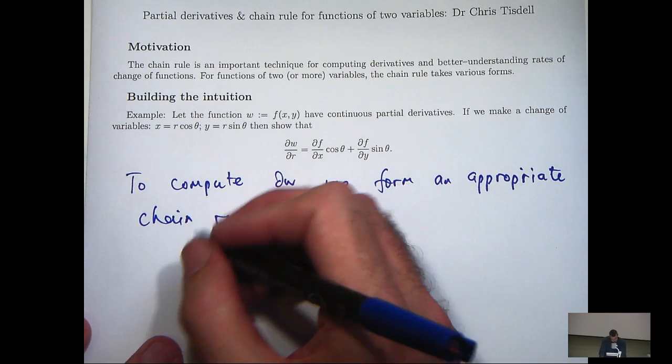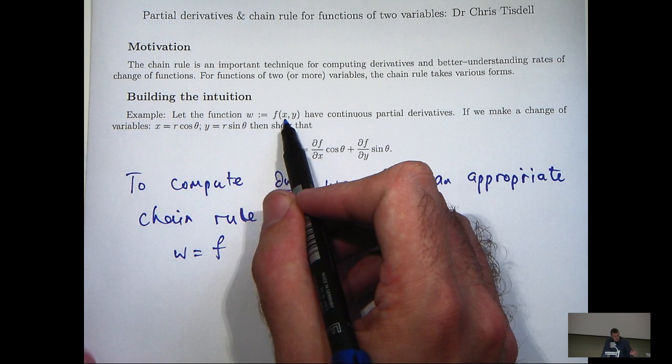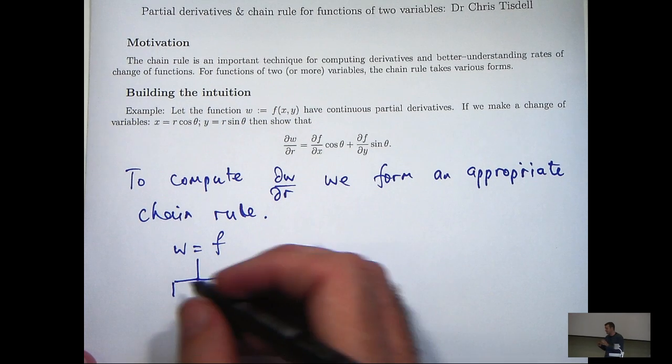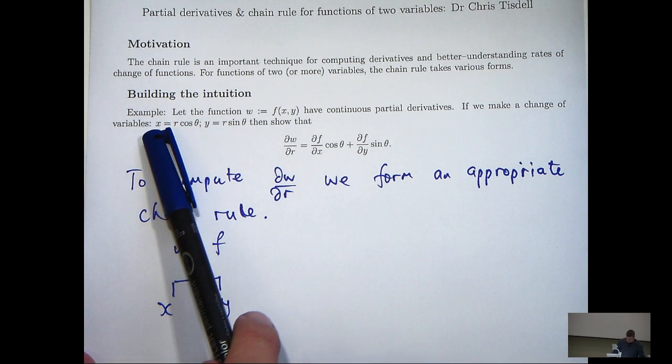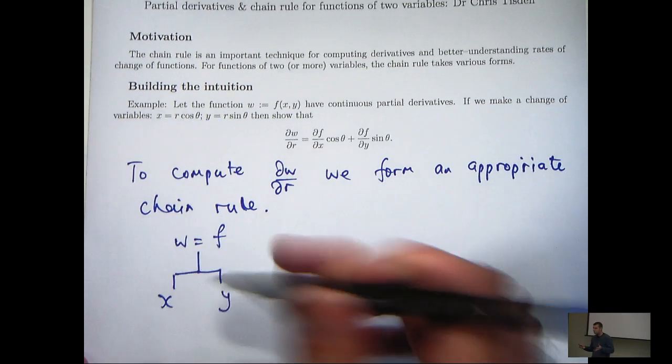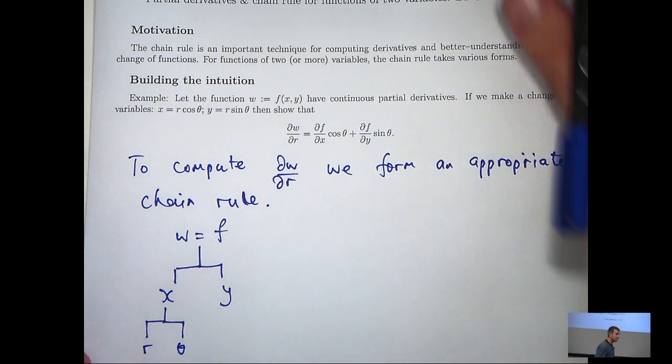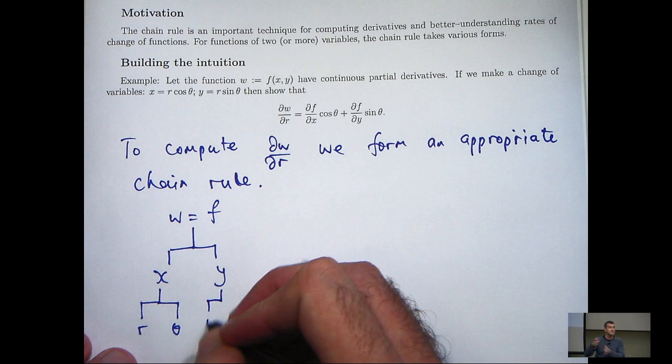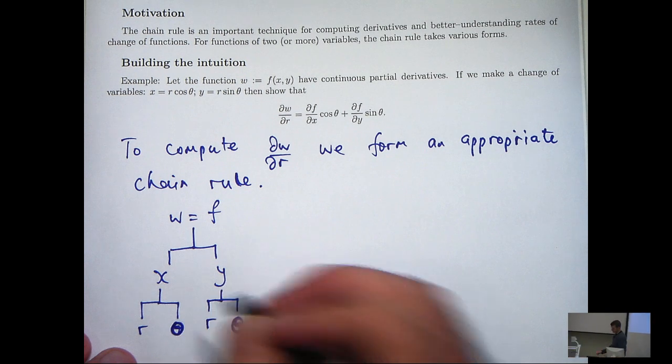First of all, we identify that w equals f, and f depends on two variables, x and y. If I draw a little splitting branch down here and identify the variables of f, then I move on. The variable x depends on two other variables, r and theta. So again, I draw some little branches showing the dependence of x on r and theta, and the same with y. y depends on r and theta.